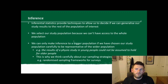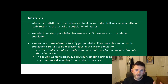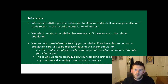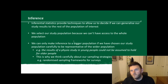Inferential stats provide techniques to allow us to decide if we can generalize our study results to the rest of the population of interest. We select our study population because we can't have access to the whole population. But we can only make inference to a bigger population if we've chosen our study population carefully to be representative of the wider population. This combines the material we've looked at in study design, David's sessions on quantitative data collection, and now the analysis framework. For example, results of a physiological study in young people could not necessarily be assumed to hold for older people — just like the Avengers example. This is why we have to think carefully about how, who, and when we sample.